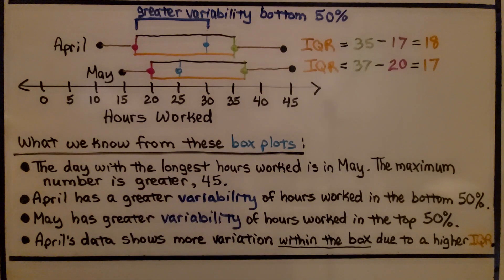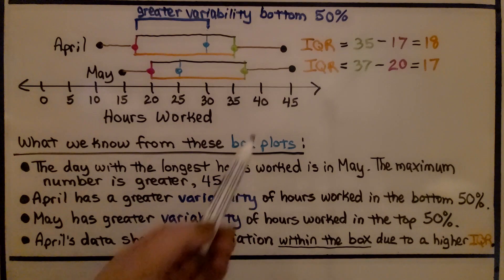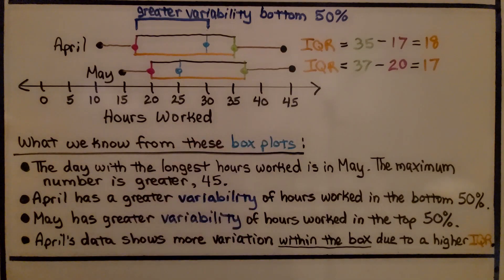Now this is what we know from these boxes, just by looking at these box plots. The day with the longest hours worked is in May. The maximum number is greater, it's 45. April has a greater variability of hours worked in the bottom 50%. See how this space is greater?